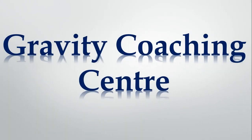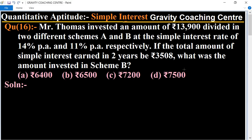Welcome to our Channel Gravity Coaching Center, Quantitative Aptitude Chapter Simple Interest, Question No. 16. Mr. Thomas invested an amount of ₹13,900 divided in two different schemes A and B at the simple interest rate of 14% per annum and 11% per annum respectively. If the total amount of simple interest earned in two years is ₹3,508, what was the amount invested in scheme B?